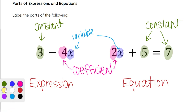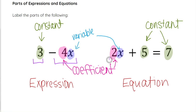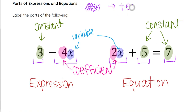One more term you've probably heard: terms. Each portion here is a term — this is a term, this is a term, this is a term, this is a term, and this is also a term. Terms are separated by addition and subtraction — they encompass that portion of the expression or equation. And like with the 7, where there's no addition or subtraction on that side, it is just a single term on its own.